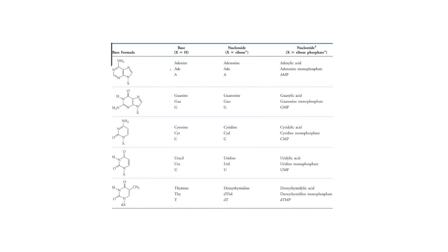Regarding nomenclature of nitrogenous bases: adenine as a free base is represented as 'Ade' or simply 'A'. When adenine is combined with sugar it forms the nucleoside adenosine. When phosphate is added to adenosine, the nucleotide is called adenylic acid or adenosine monophosphate (AMP).